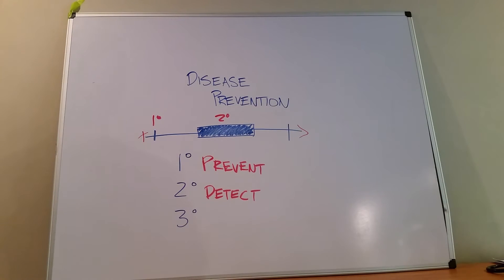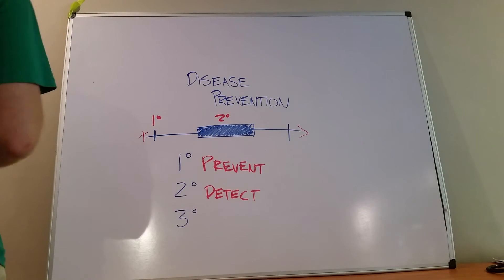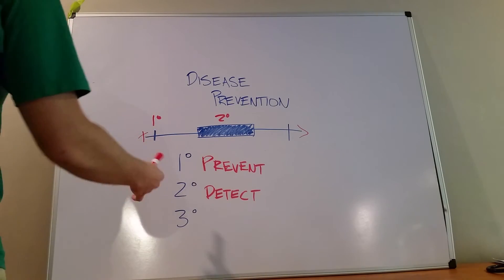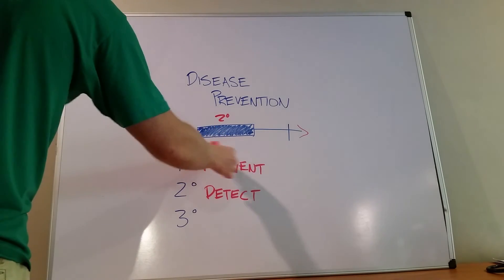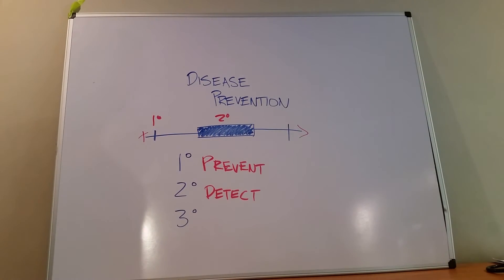And so a good example of secondary prevention is a colonoscopy. Because we've already done all the right things trying to avoid certain allergens or exposures or behaviors for diverticulosis or colon cancer or whatever. But now there's still a chance you're going to get it. So we're going to do detection with secondary disease prevention.